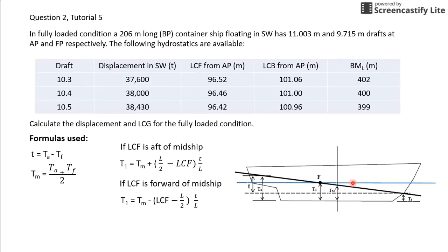The next formula is to find your trim read at your LCF. If your LCF is aft of midship, you use this formula. If your LCF is forward of midship, you use this formula here. In this case, your LCF is actually aft of midship of the vessel, so you will use this formula here.